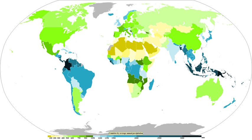The humid subtropical climate zone features winter rainfall from large storms steered by the westerlies, and summer rainfall from thunderstorms and occasional tropical cyclones. Humid subtropical climates lie on the east side of continents, roughly between latitudes 20° and 40°. An oceanic climate is typically found along west coasts at middle latitudes, accompanied by plentiful precipitation year-round. The Mediterranean climate regime features hot, dry summers and cool, wet winters. A steppe is a dry grassland. Subarctic climates are cold with continuous permafrost and little precipitation.